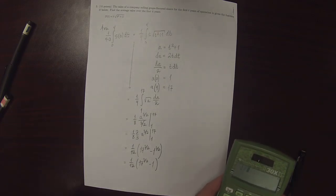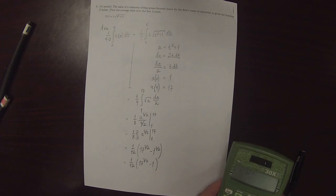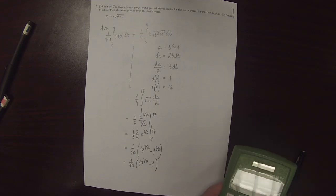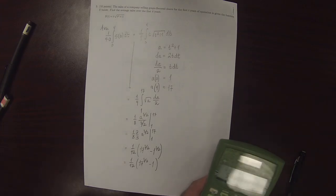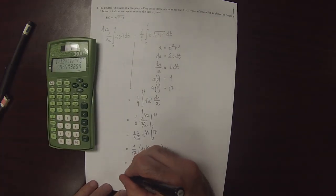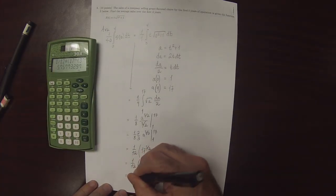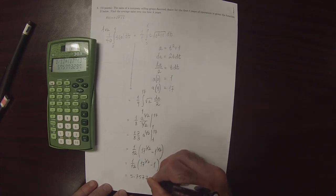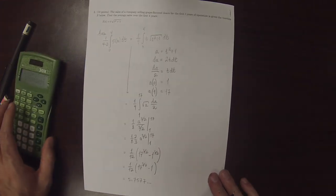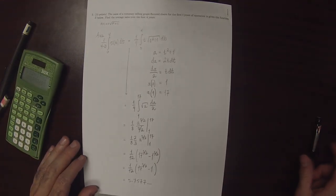So then, plugging this into the machine, this would be 17 carat 3 over 2 minus 1. So that's 5.7577... And that's the answer to the exercise.